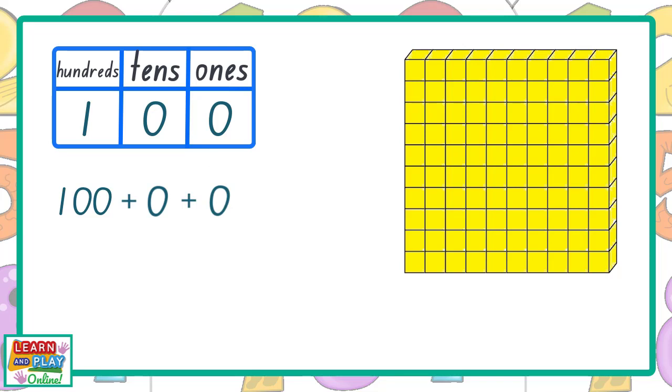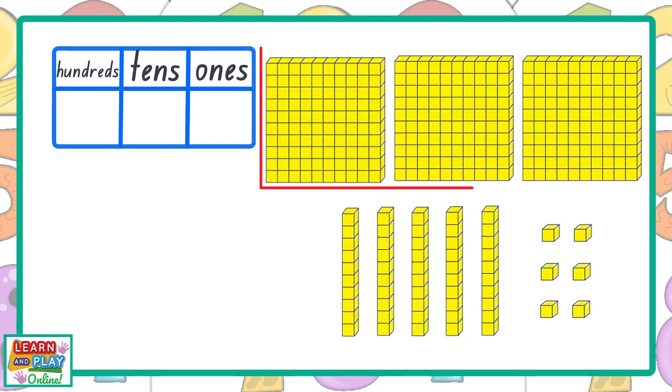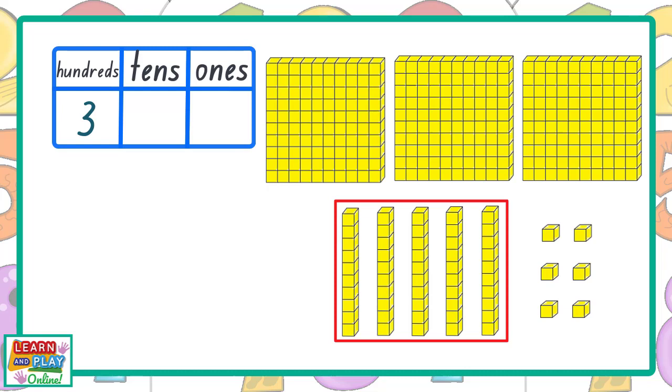So when you add 100 with 0 and 0, you will get 100. Let's do one final example. In this group, we have three of the hundreds blocks, so let's record that in our table. We also have five of the tens blocks, so let's record that in our table. And finally, we have six of the ones blocks, so let's record that information.